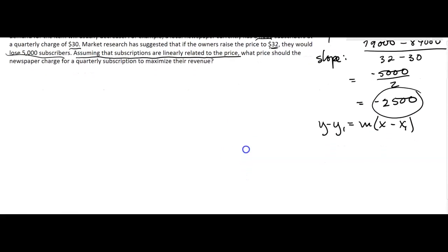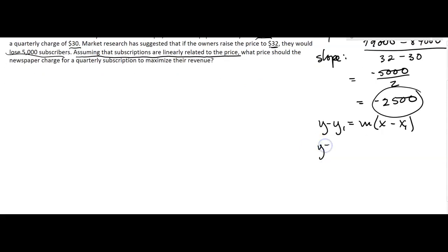Lost my point. Well, I remember what it was. So we had y minus 84,000 equals negative 2,500 times x minus 30. We work our equation and then we get y equals negative 2,500x plus 159,000.